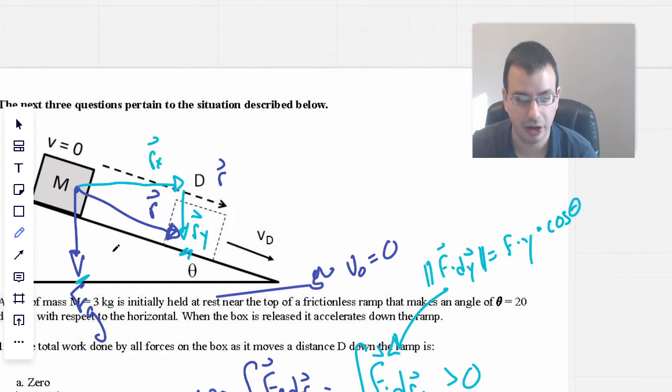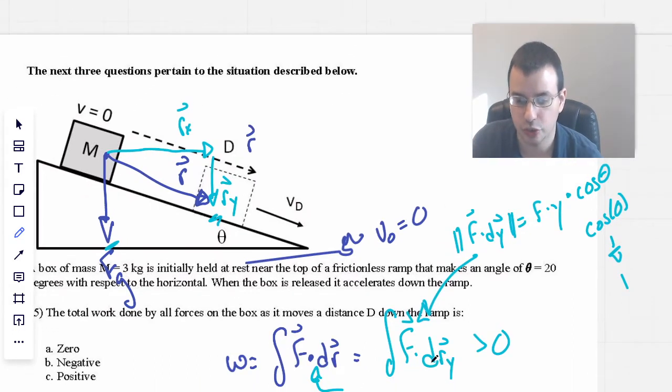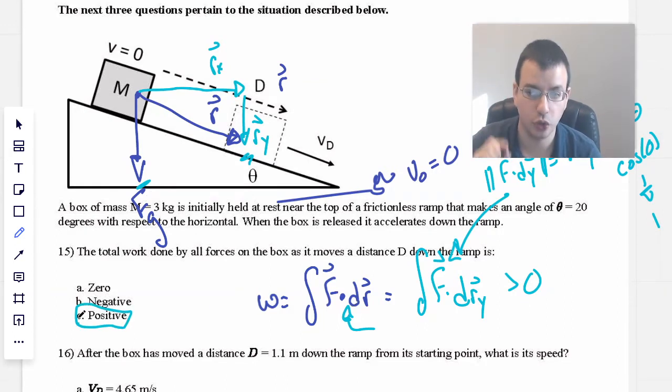In this case, since they're parallel in the same direction, this theta is going to be zero. Cosine of zero is one. If they're in opposite directions, then it would be negative one. Long story short, both the direction of motion, the ry portion component, and the force are in the same direction. Therefore, this is going to be positive, greater than zero.